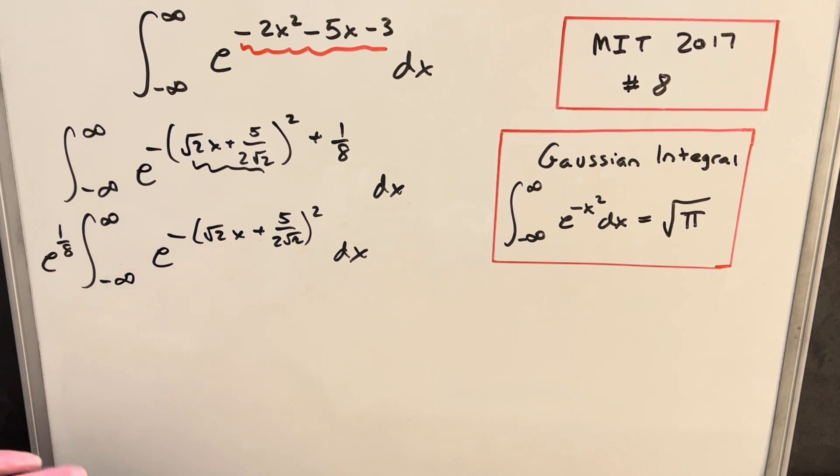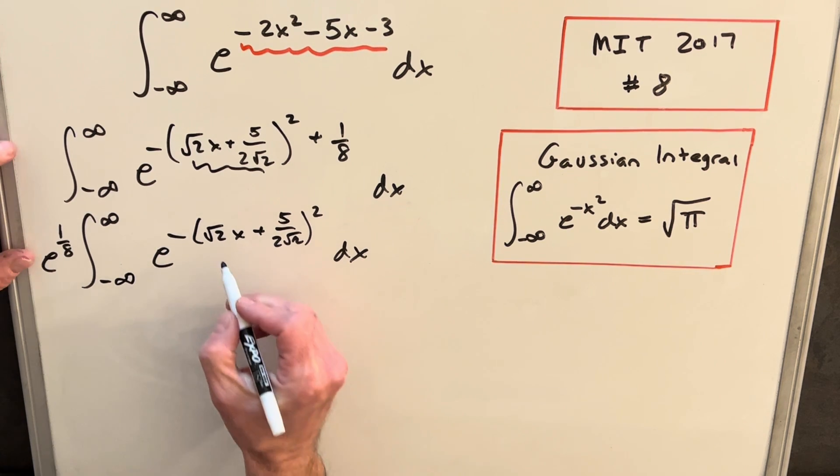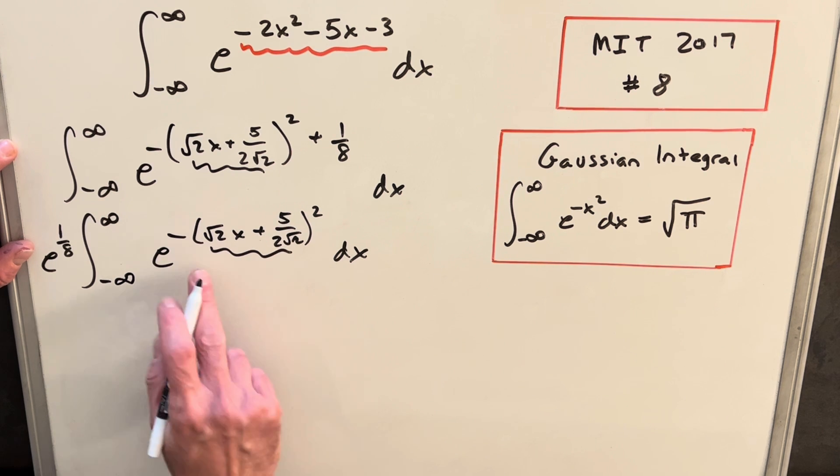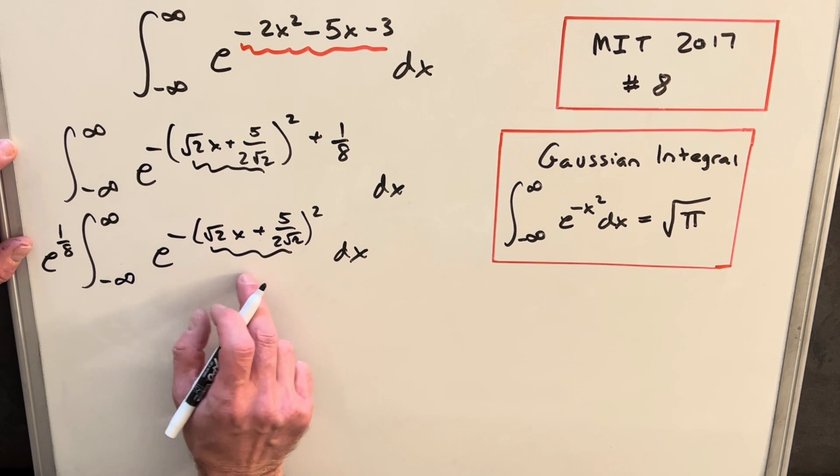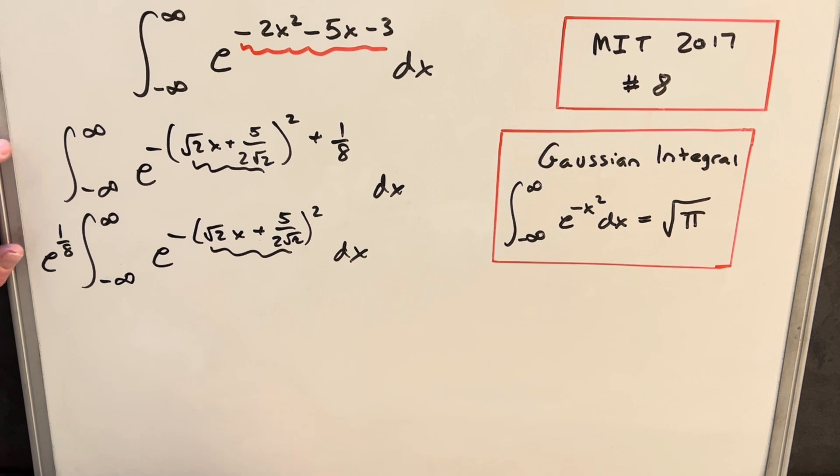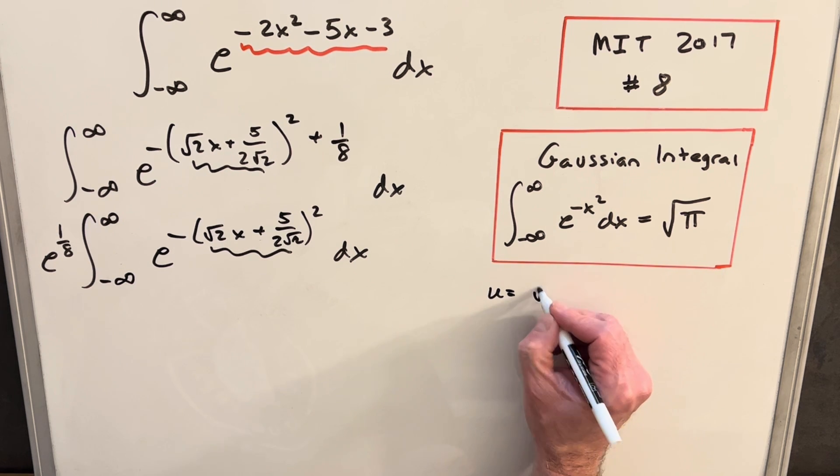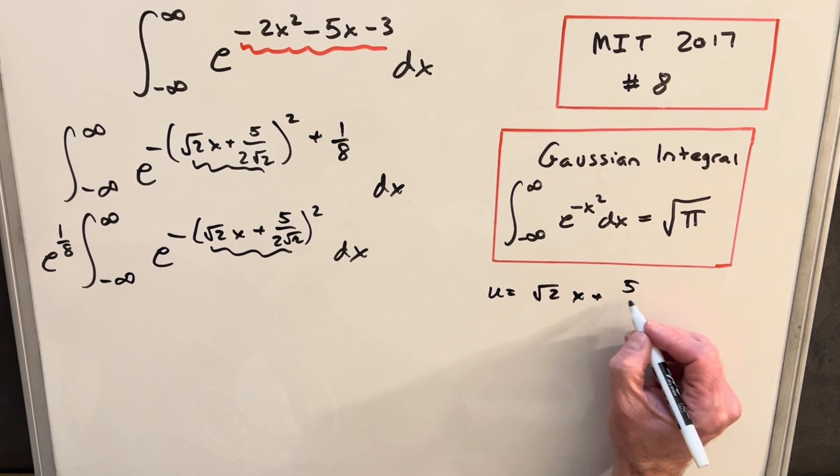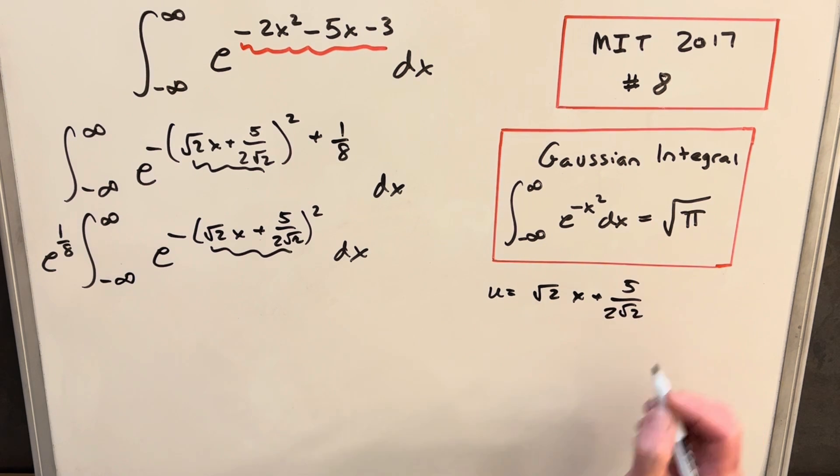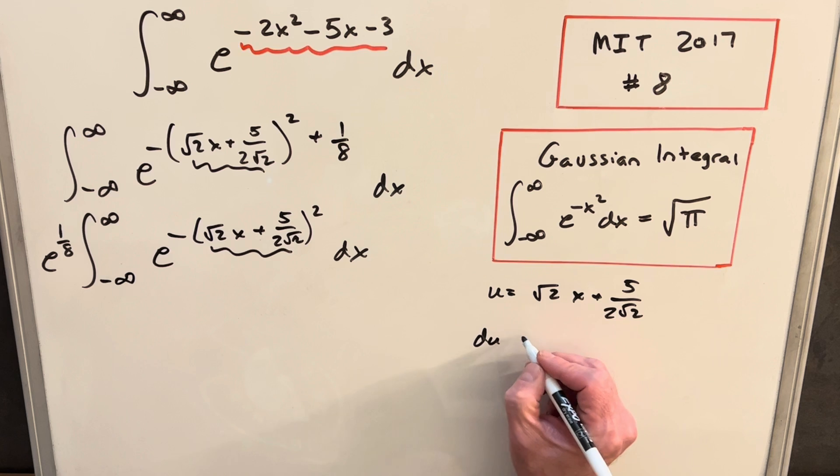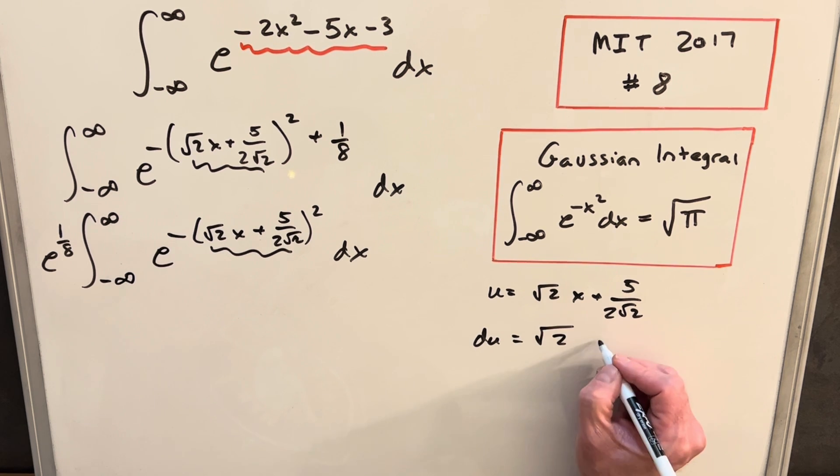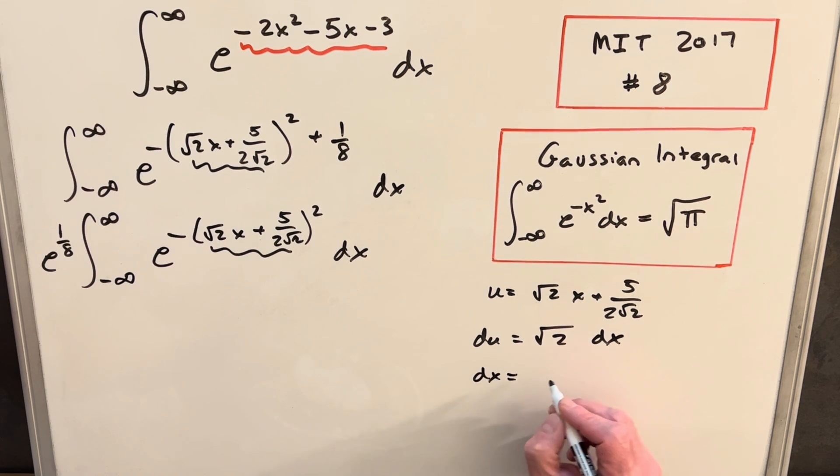And now we really just have one term here, which makes this perfect for a u substitution. So we'll just make this piece our u. And you'll see when we do that, this is e to the minus u squared. We really have exactly what we need for the Gaussian integral. Well, let's just do that substitution and see what happens. So we'll have u equals square root of 2x plus 5 over 2 square root of 2. And then we'll take the derivative du is just going to be square root of 2 dx. But then we'll solve for dx real quick. And we're going to have dx is du over square root of 2.